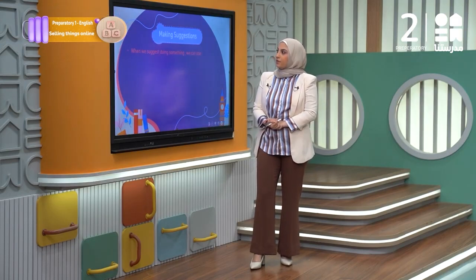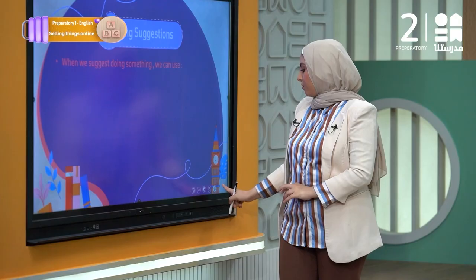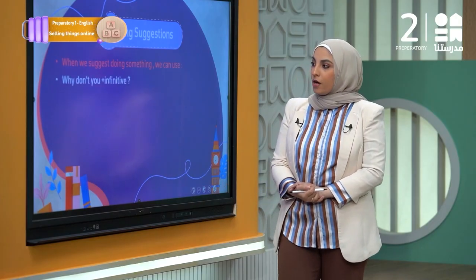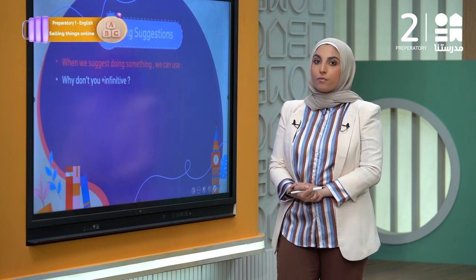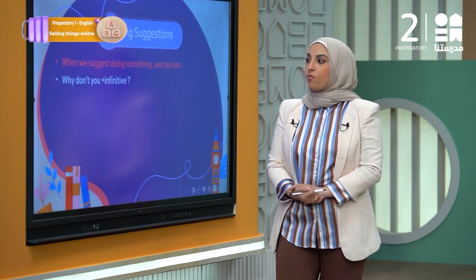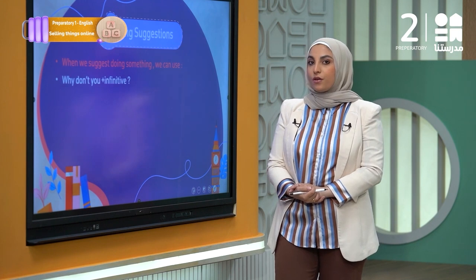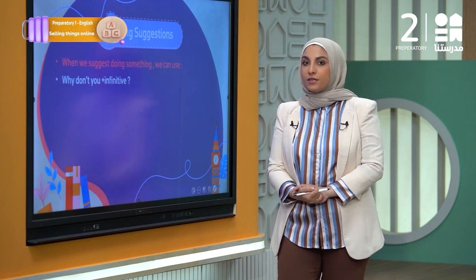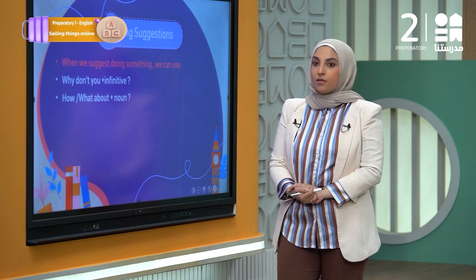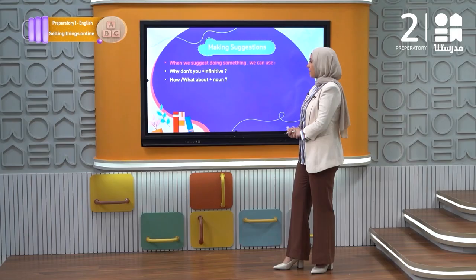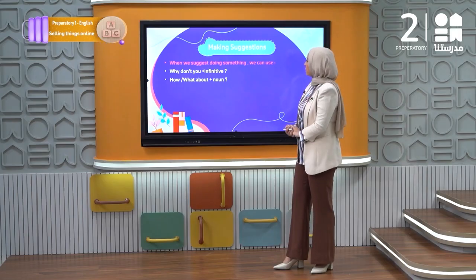Now let's start making suggestions. When we suggest doing something, we can use 'Why don't you' plus the infinitive — the base form of a verb. For example: 'Why don't you tell me the truth?' 'Why don't we go out today?' Another way to suggest something is 'How about' or 'What about' plus a noun.